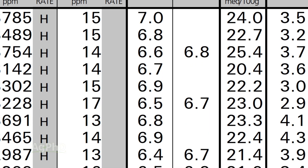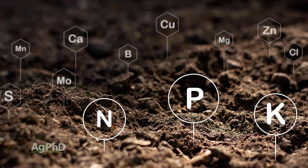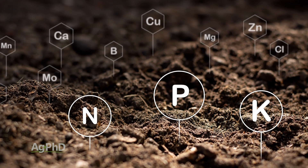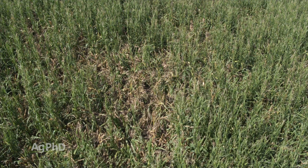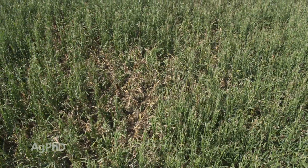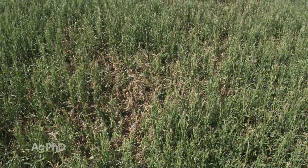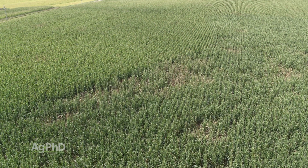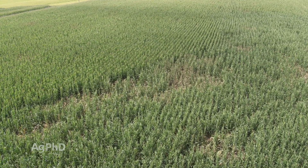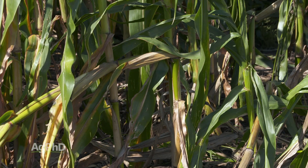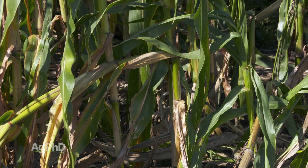Other things you can see out in fields that would lead you to believe you've got a poor balance of fertility in the soil would be standability issues. We saw a lot of fields again this year where we had plants that were leaning over or falling apart, where right across the road — or in other parts of the field — plants were standing just fine. This is often a nutrient issue in those certain parts of fields, especially when we look at things like potassium.